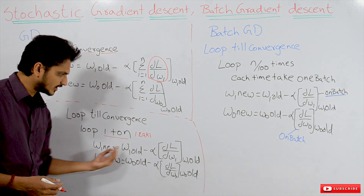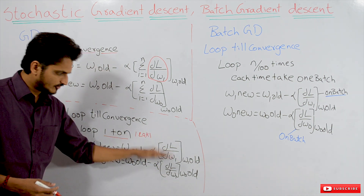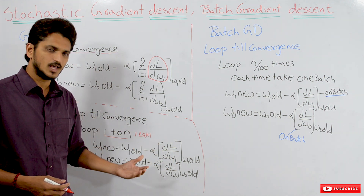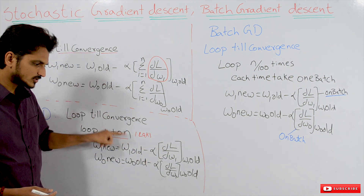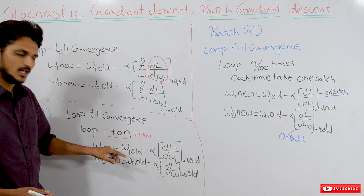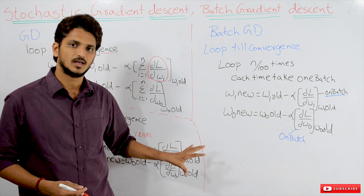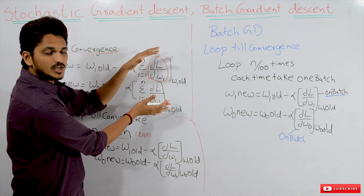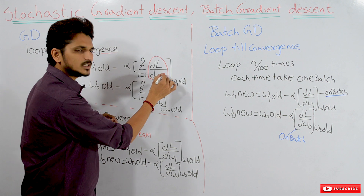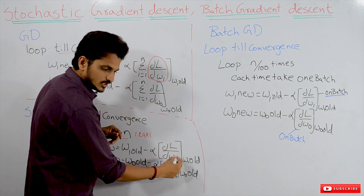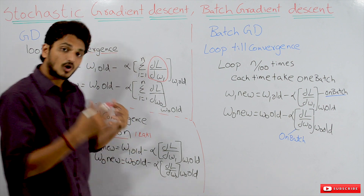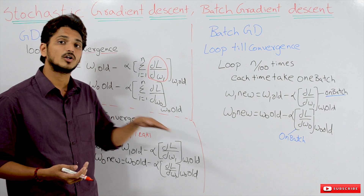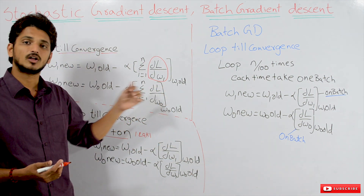Continuing the inner loop: fourth point update w1_new, fifth point, and so on through all 1 lakh points. If convergence is still not reached, we repeat this process again. This is what stochastic gradient descent is. Stochastic gradient descent is computationally good, whereas regular gradient descent — substituting all 1 lakh data points and summing them up — is computationally hard.